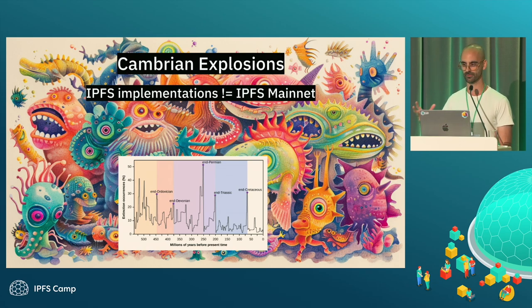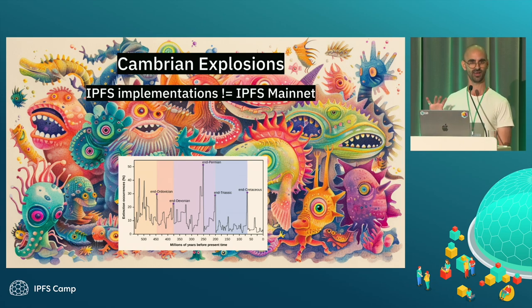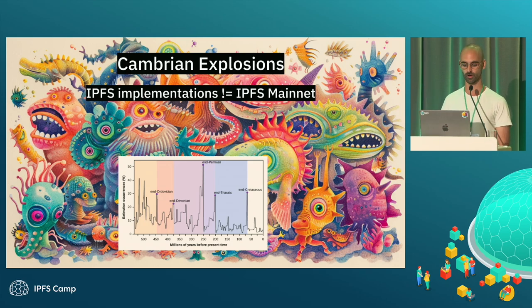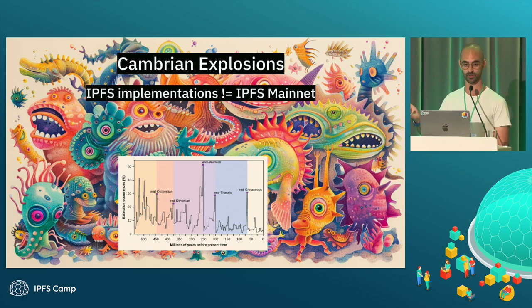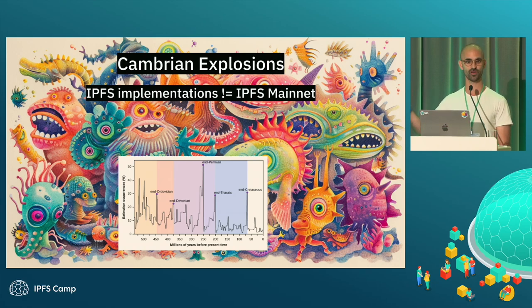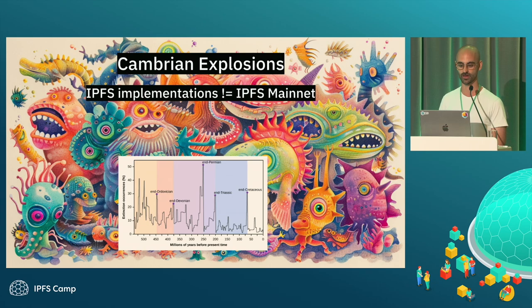Two years ago there was a lot of talk about the Cambrian explosion we wanted to see in IPFS implementations — and we got it, with many different implementations now. Not all of them are what we call IPFS mainnet, a recent term referring to the Amino DHT, UnixFS, and the gateway part of the stack. Diversity and optionality are great, but they trade off interoperability. Looking at history, Cambrian explosions are followed by mass extinction events — at the end of the Permian period, roughly 95% of extant species were lost. Some experiments we try out simply aren't going to work out.